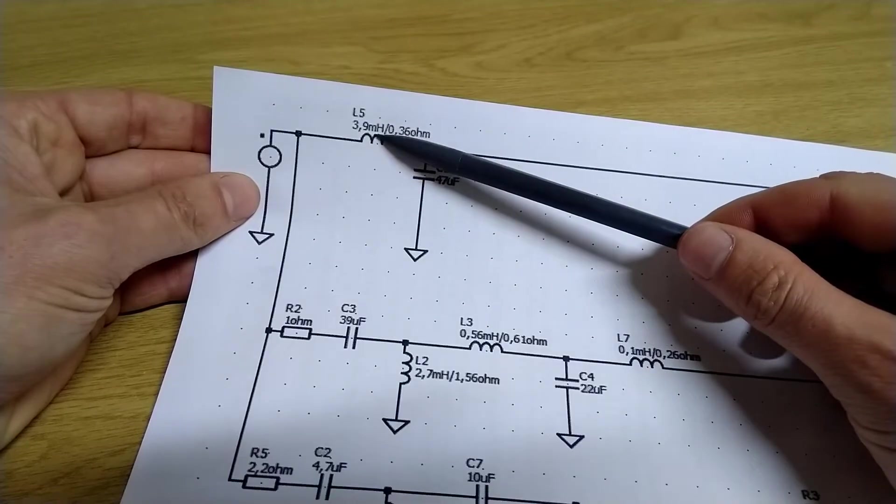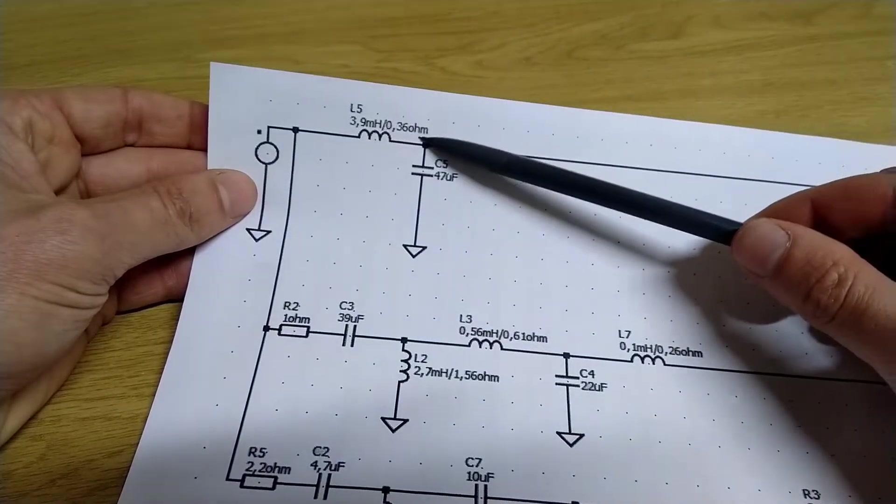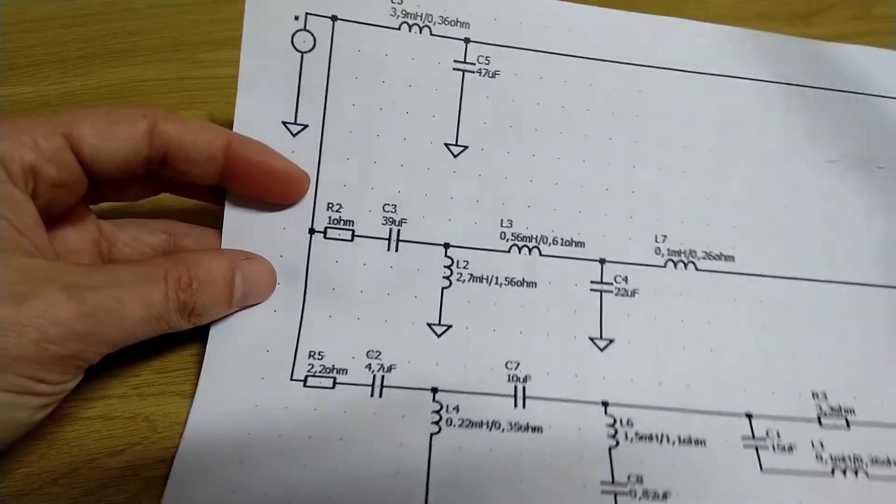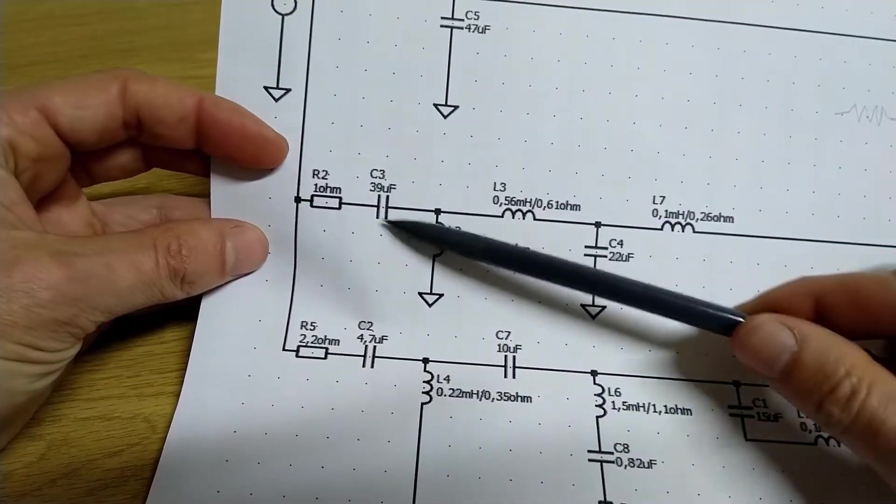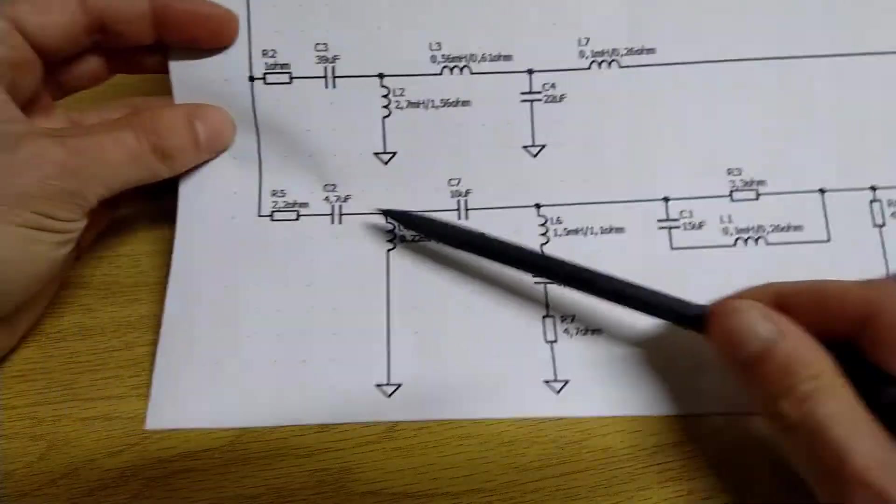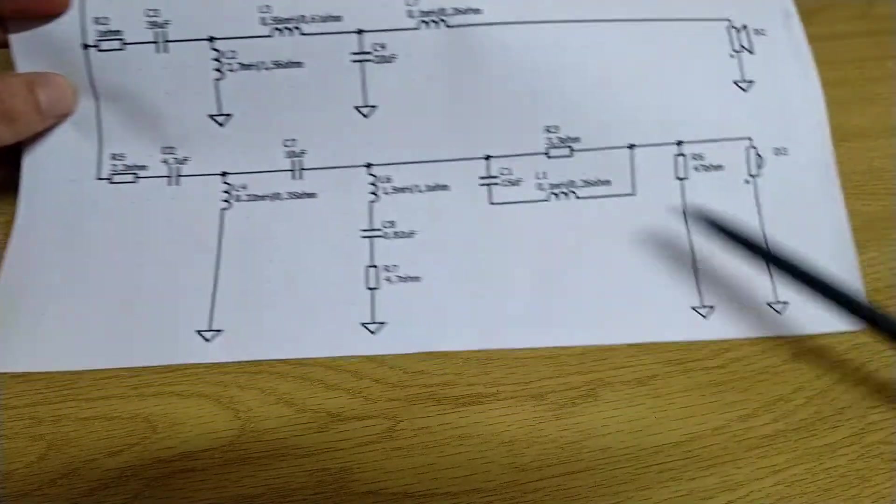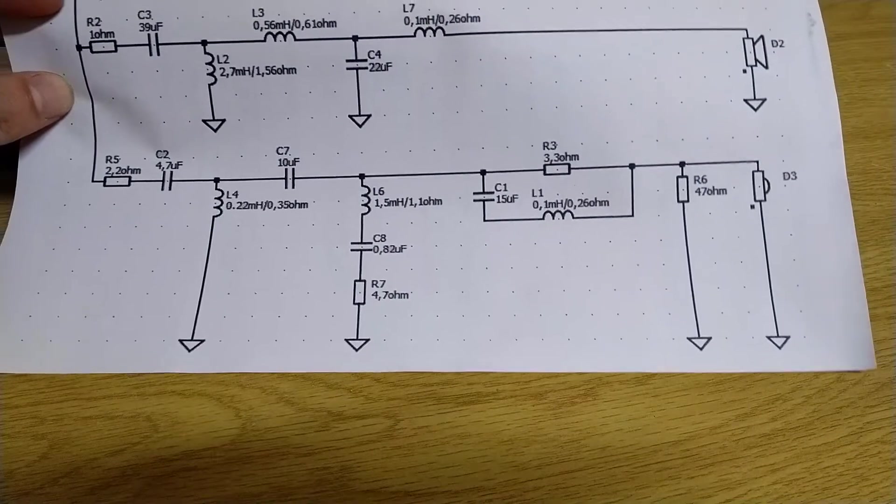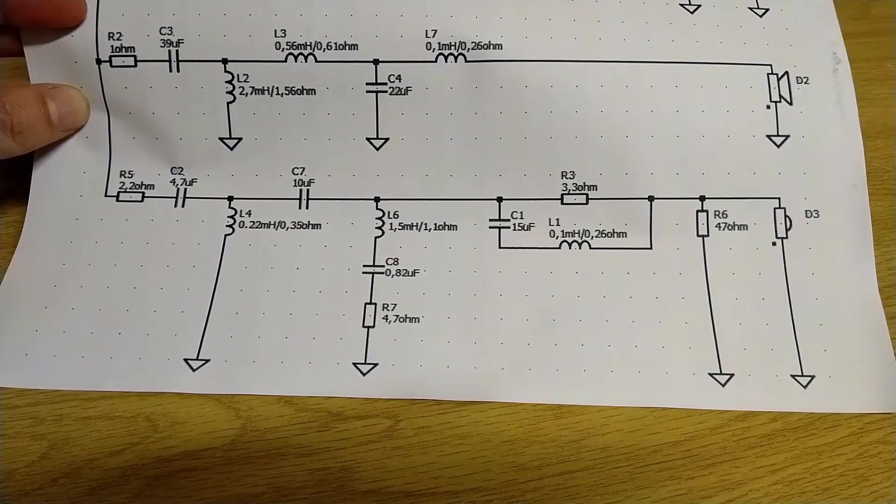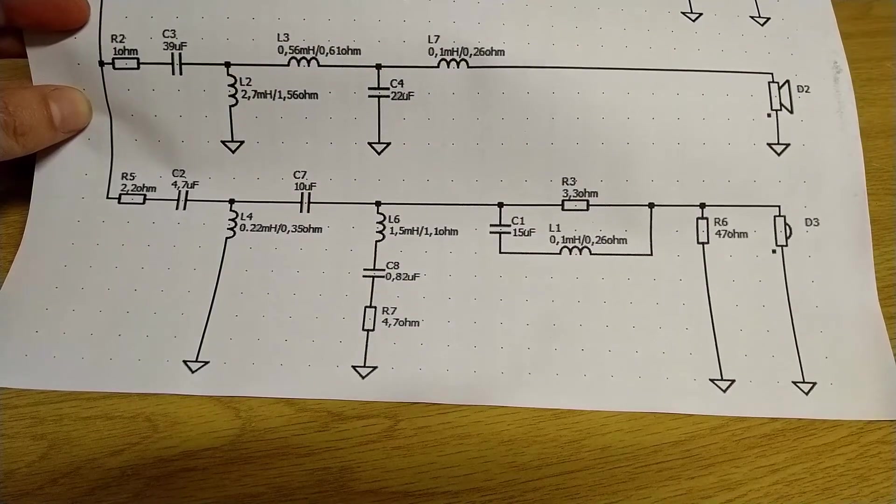That's 3.9 millihenry and that's the resistance of it, which I think is the secondary consideration. More resistors, more capacitors, more inductors, and so you go on. There's quite a bit of stuff going on here for the tweeter. In fact, so much so that I'm probably going to have to make multiple crossover boards to fit them in the speaker where I want them to go.